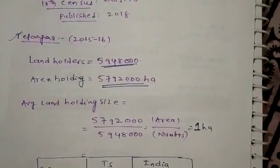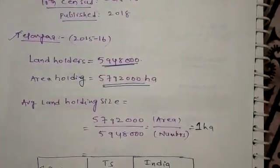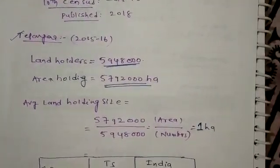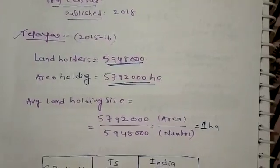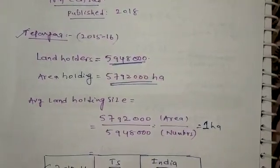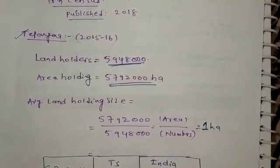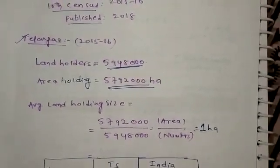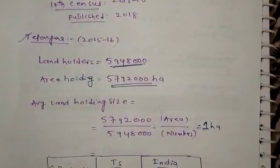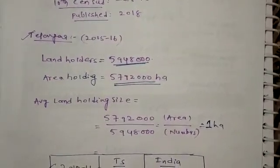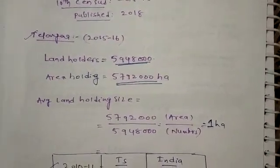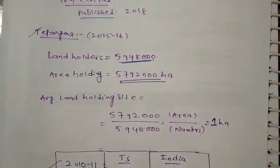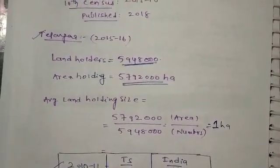The total number of farmers is 59 million (59 lakh), holding 57 million hectares of land. Landholders are farmers — the number of farmers is 59 million and the land area held is 57 million hectares.